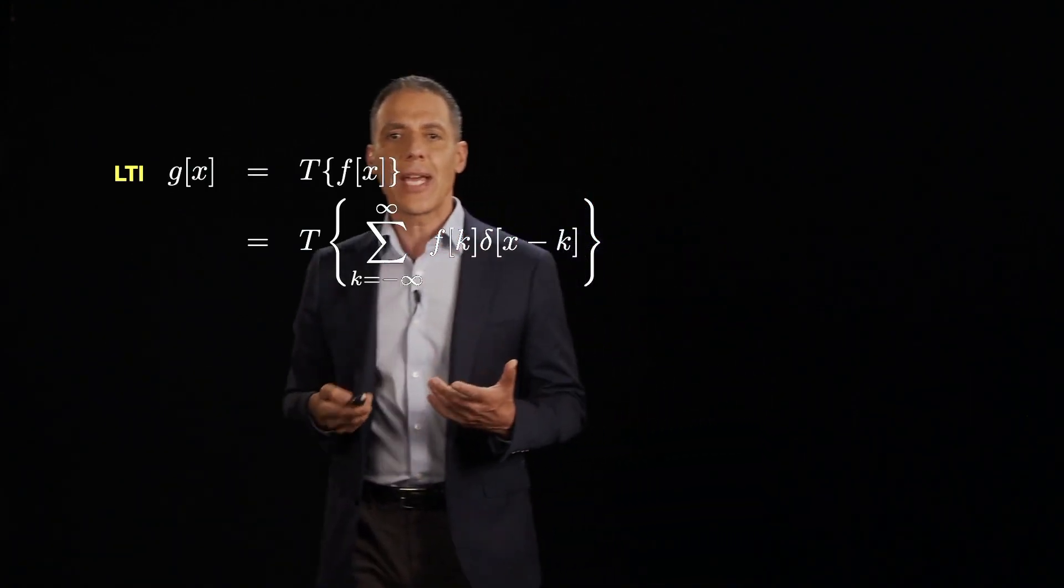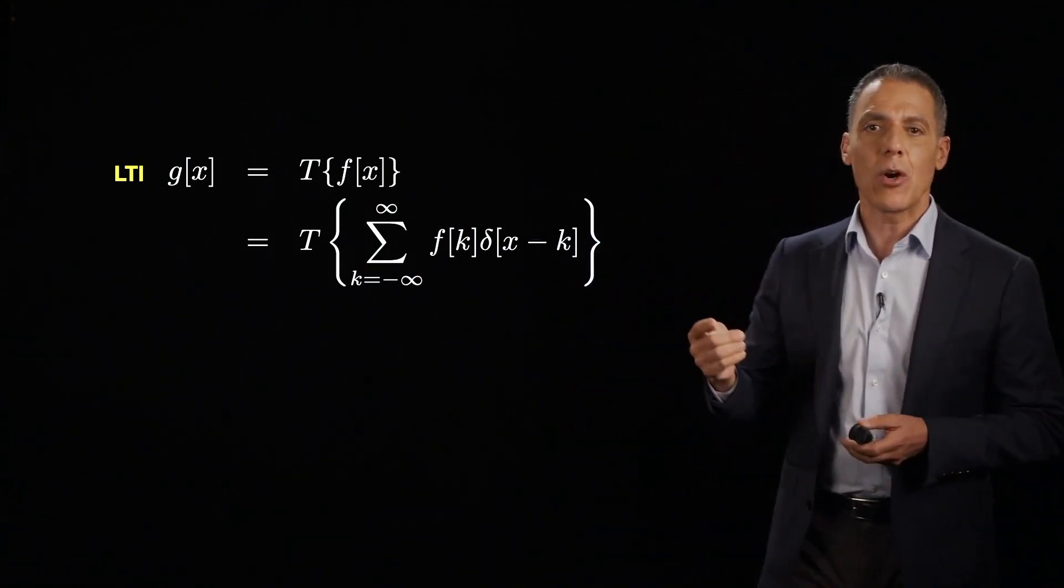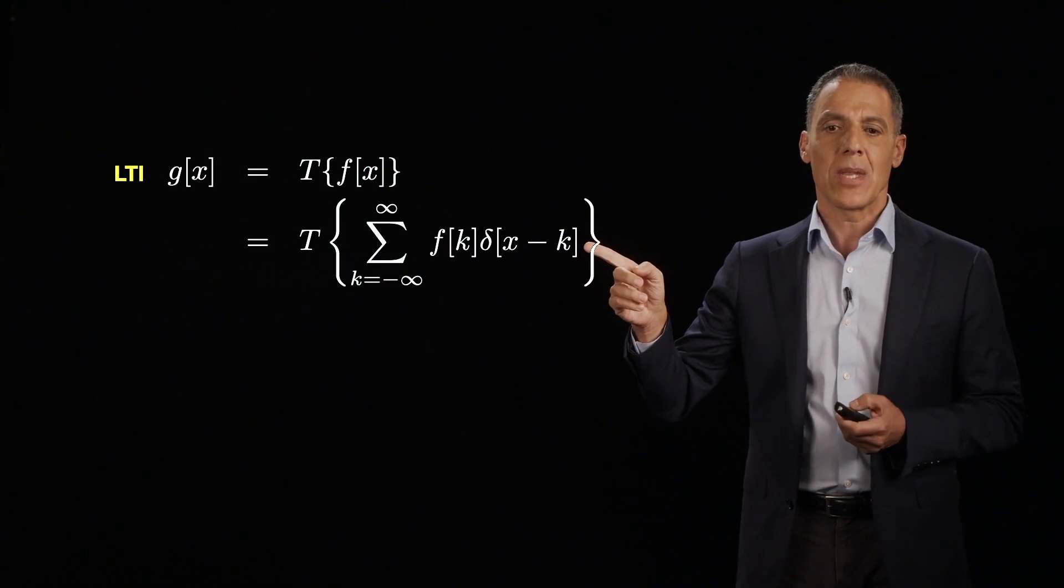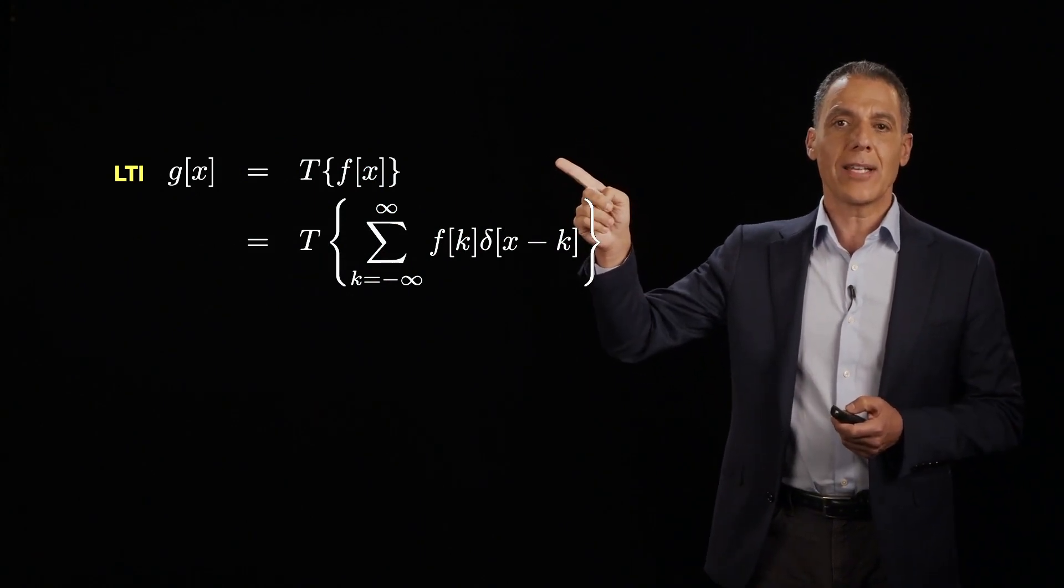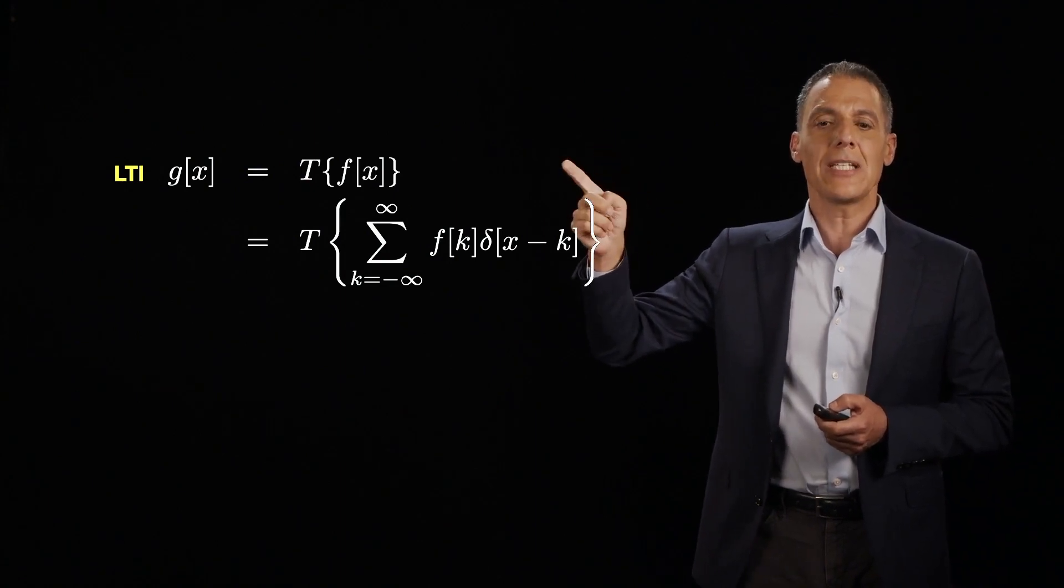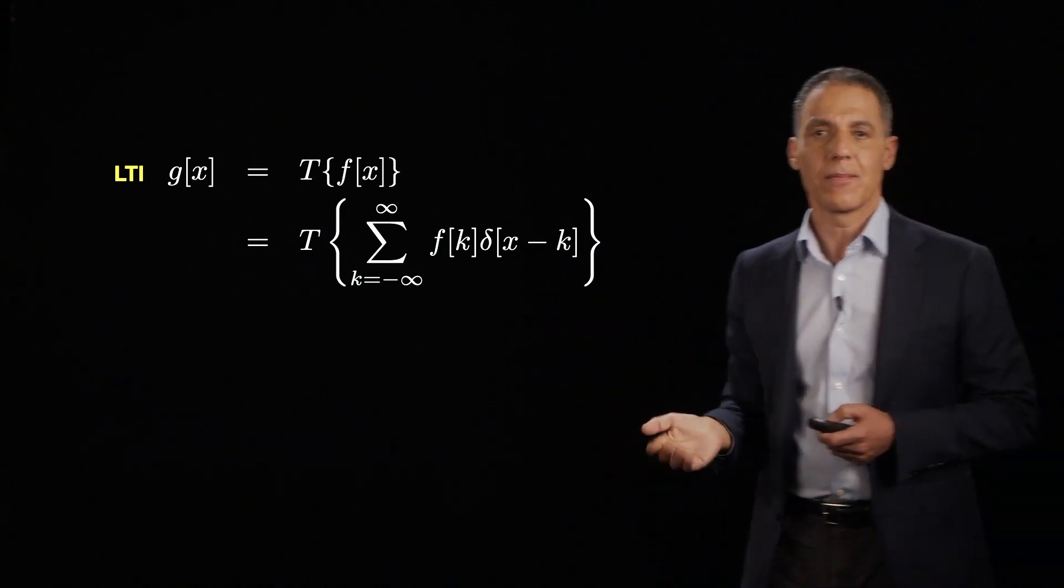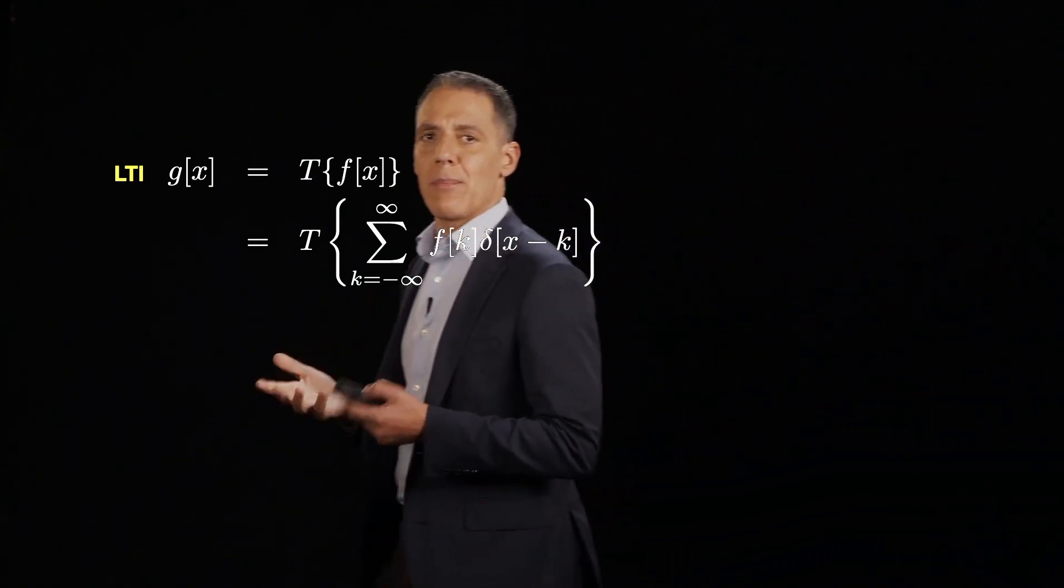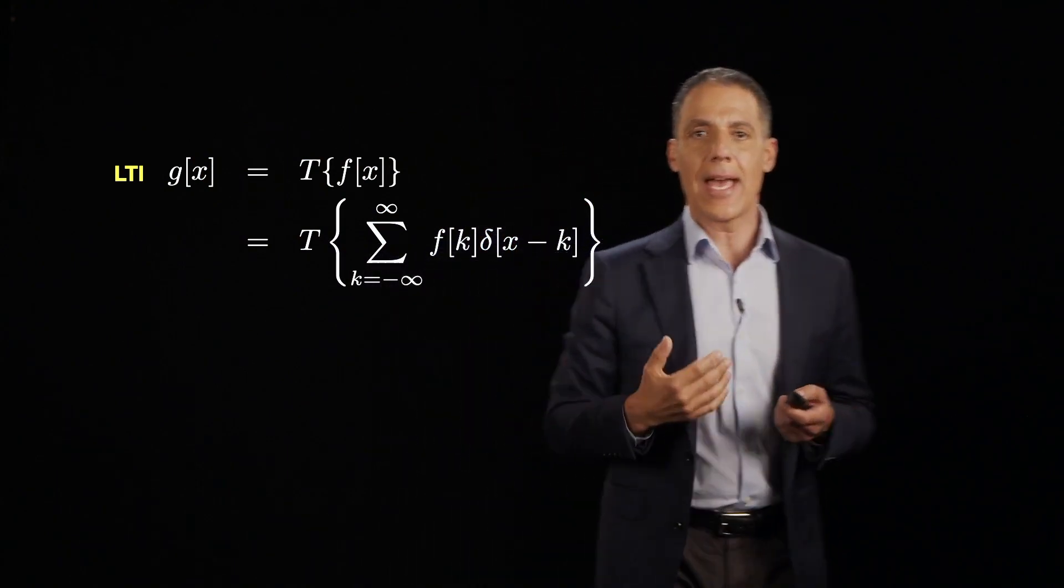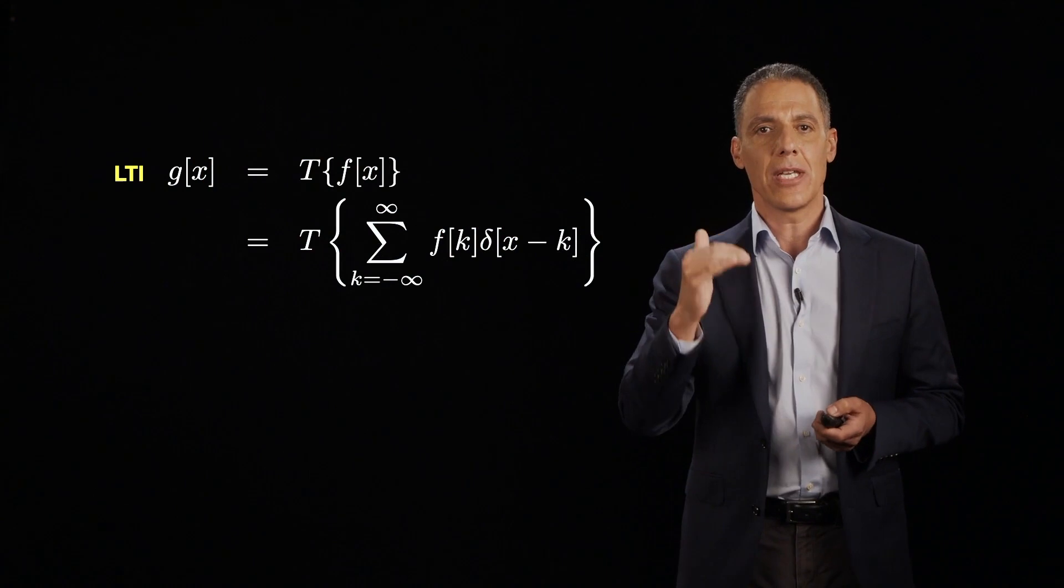Now, to understand the power and the importance of these linear time invariant systems, we need to go back to our delta representation of a signal. So let me remind you where we are. We have g[x] is the output of a linear time invariant system T. So T takes as input some signal f and outputs a g. Now, remember that I can write any discrete time signal as a sum of scaled and shifted unit impulses.